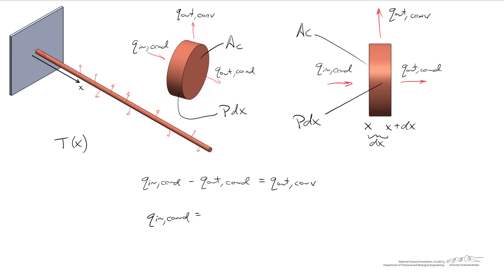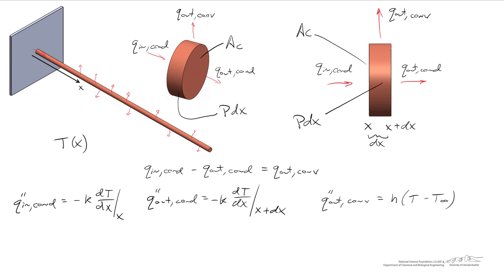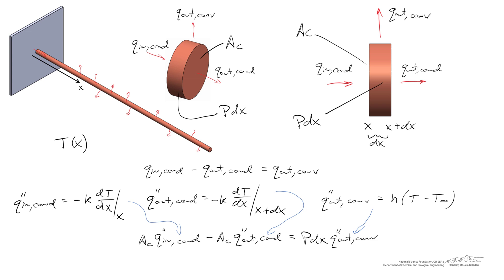Using Fourier's law, the rate at which energy enters due to conduction is negative k dT/dx evaluated at x. The energy leaving due to conduction is negative k dT/dx evaluated at x plus dx. These are energy flows per unit area, so I'm using double prime notation to emphasize we're dealing with fluxes. The convective flux is the heat transfer coefficient h multiplied by the temperature difference. To use these expressions, we multiply each flux by its corresponding area: the cross-sectional area A_C for conduction, and P·dx for convection.